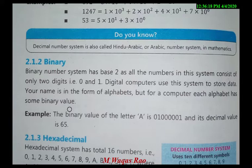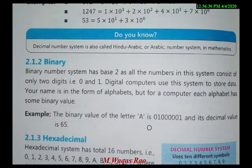Every alphabet has a corresponding binary code stored against it. For example, the binary code value of 'A' corresponds to a decimal value of 65. So how is this possible? The value consists of 0s and 1s, and it is possible through a standard coding scheme.